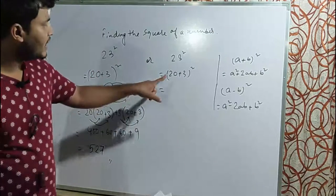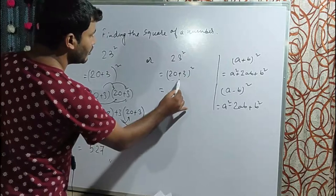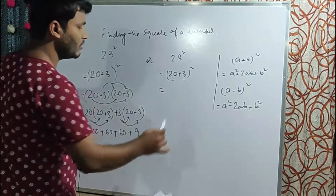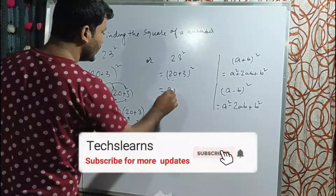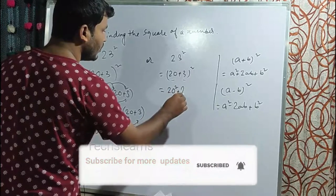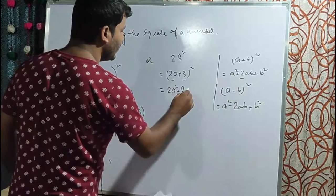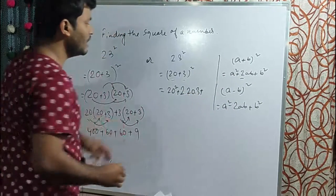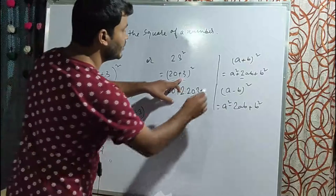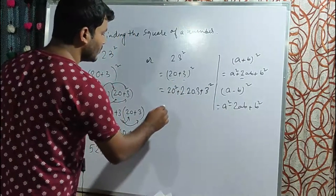Applying (a+b)² formula, we get 20² plus 2ab, where a is 20 and b is 3, plus b². So a² equals 400.